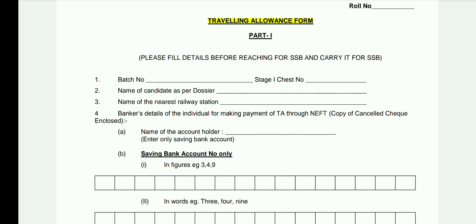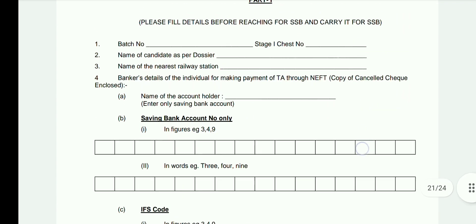Appendix M contains the Travelling Allowance form — take a printout of this form. Travelling allowance is available only for first-time permanent commission SSB candidates, covering the third tier AC train fare from your home to the SSB center by the shortest route, for the two-way journey. Documents to attach with this form: a xerox copy of the first page of your bank passbook or a cancelled cheque, and a xerox copy of your train ticket.